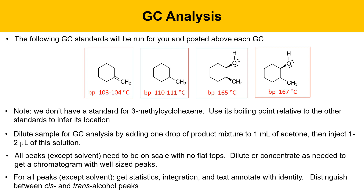For all peaks except the solvent acetone, obtain statistics information including retention time and integration (peak area), then text-annotate each peak with its identity. Distinguish between the cis and trans alcohol peaks — they have different boiling points and are well separated on our GCs, so they'll appear as two separate peaks.